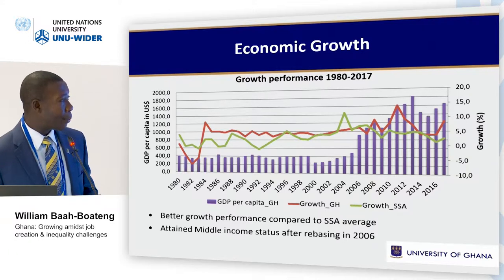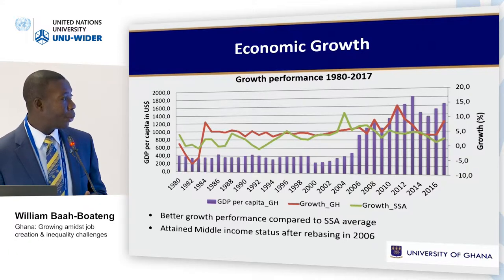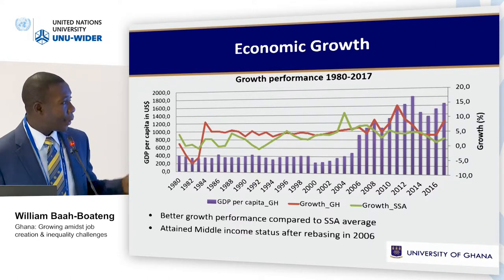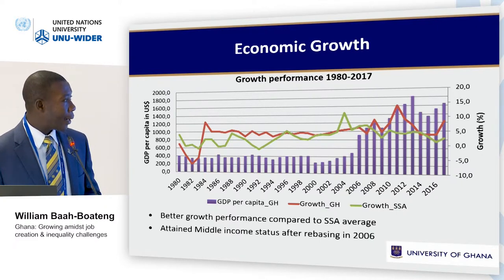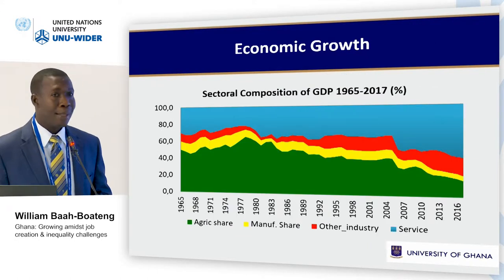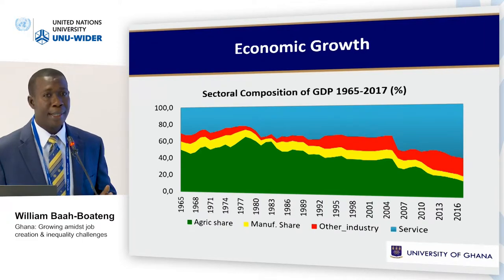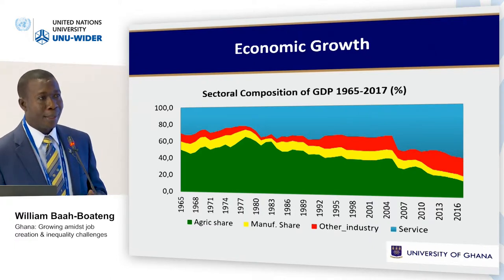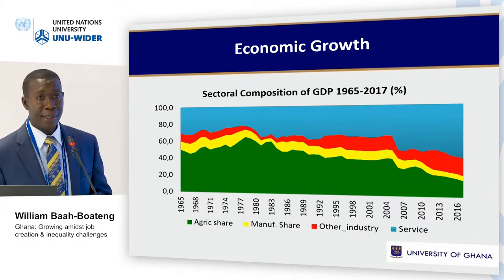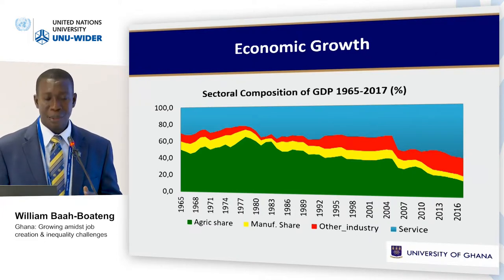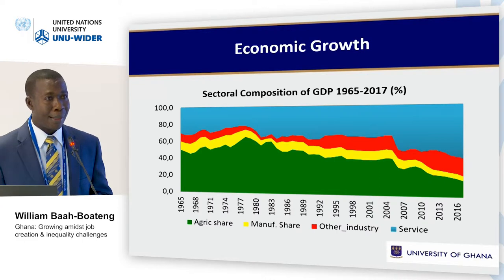This is the economic growth pattern from 1980 to 2016. You can see that before 1984 we had negative growth, and since then we've been up there, and the average is better than the South African average. In terms of sectoral composition trend, we are moving from agriculture to services — the green one is shrinking while the blue one is expanding — and in the middle you see the yellow one, which is manufacturing, also shrinking. There seems to be a missing middle that the country is confronted with.